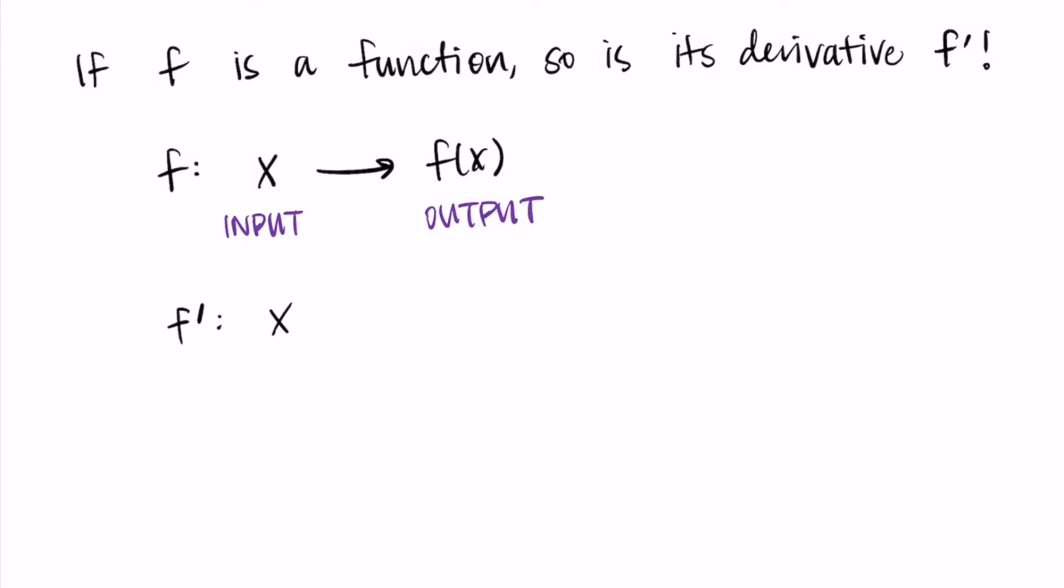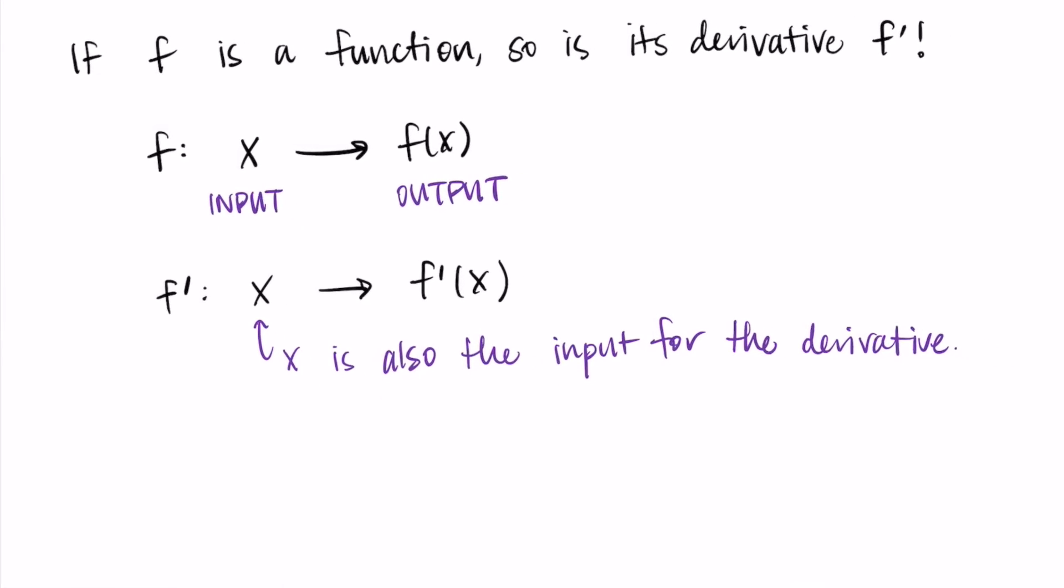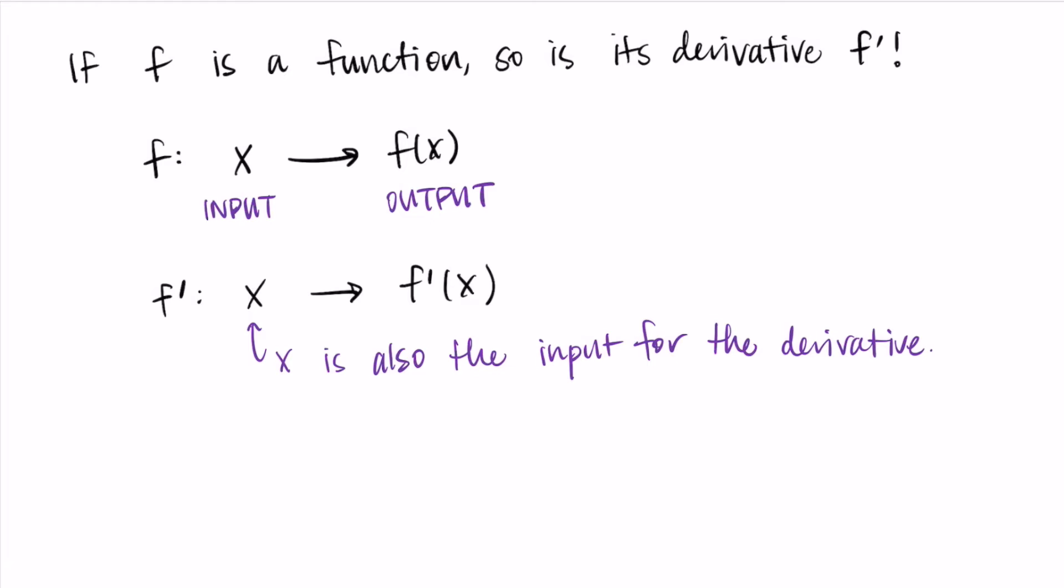Then for f prime we use the same input, so we start with x, but then it outputs f prime of x, the derivative at that point. And again, the x value that goes as the input for f is the same x that is the input for f prime. Now let's think about what this looks like on a graph.